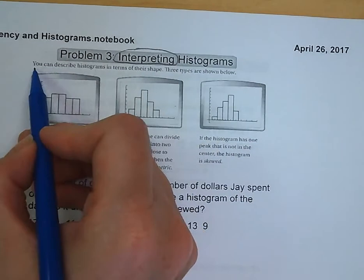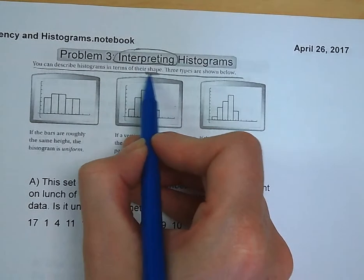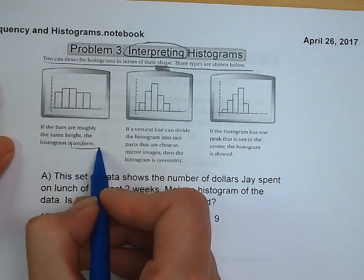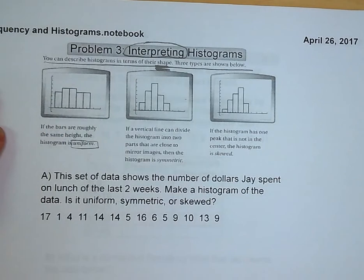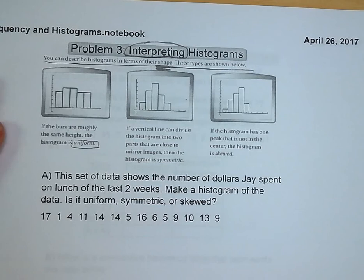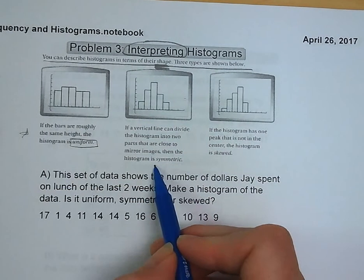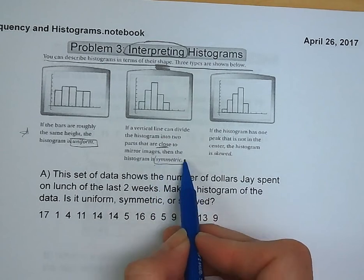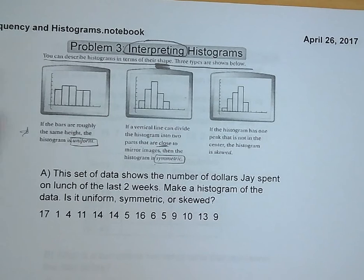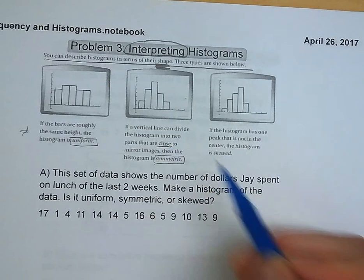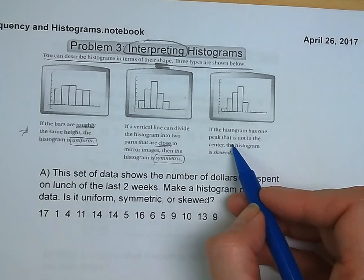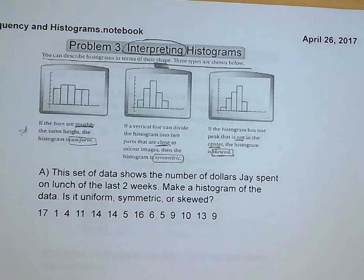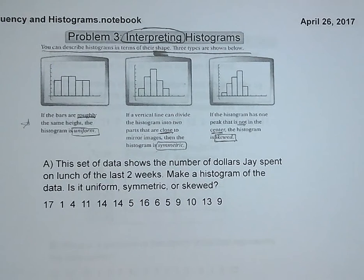We've got some examples up at the top there where we are describing a histogram in terms of its shape. There are three types that we are going to look at. The first one is that the bars are roughly the same height, and we call this uniform. This means they're not all exactly the same, but they're really close. The second one is if you can divide the graph into two parts that are pretty close to mirror images, we're going to call that histogram symmetric because it's balanced on both sides.